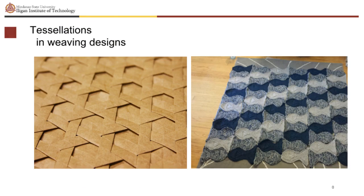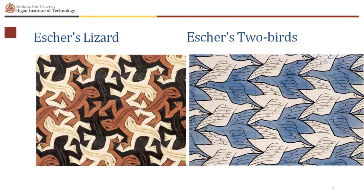Tessellations in weaving designs is also imminent. M. C. Escher, in full Maurits Cornelis Escher, born June 17, 1898 in Leeuwarden, Netherlands, died March 27, 1972 in Laren, is a Dutch graphic artist known for his detailed realistic prints that achieve bizarre optical and conceptual effects. His series Regular Division of the Plane, begun in 1936, is a collection of his tessellated drawings, many of which feature animals.